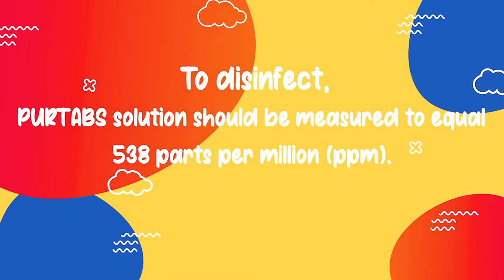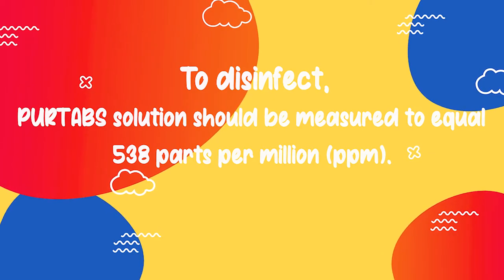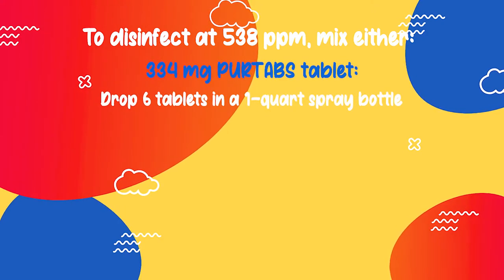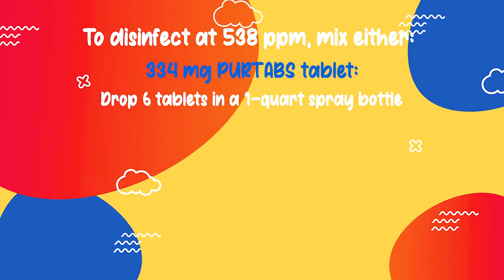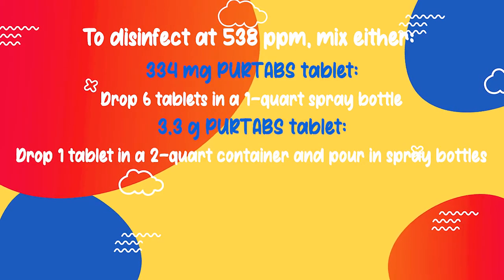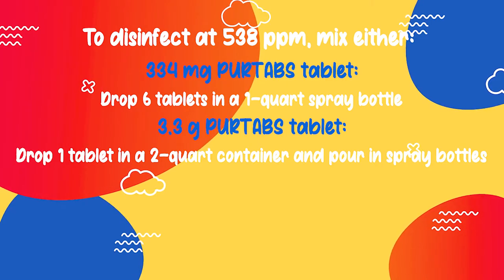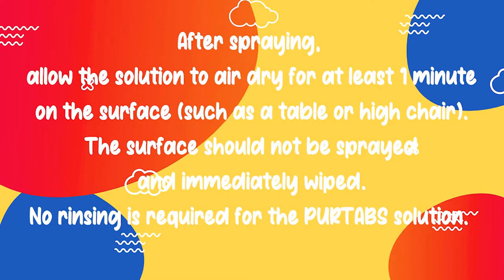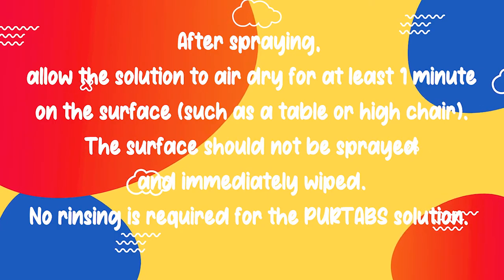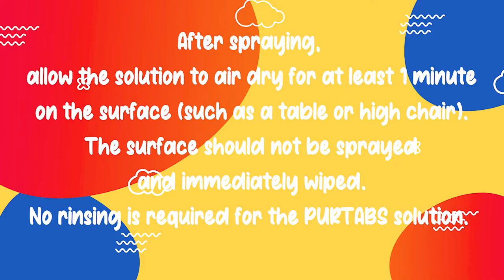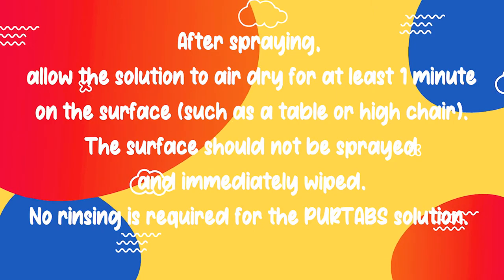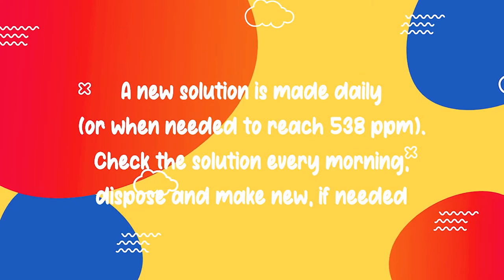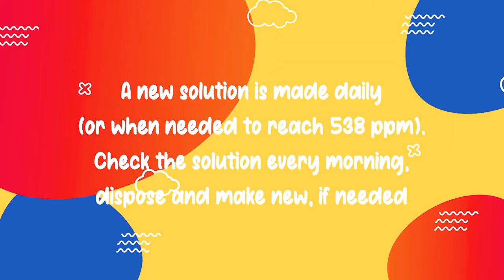To disinfect, the Pure Tabs solution should be measured to equal 538 parts per million (ppm). To disinfect at 538 ppm, mix either: a 334 mg Pure Tabs tablet — drop six tablets into a one-quart spray bottle — or a 3.3 gram tablet — drop one tablet into a two-quart container and pour into spray bottles. Use chlorine test strips to check the solution. After spraying, allow the solution to air dry for at least one minute on the surface, and do not immediately wipe. No rinsing is required. A new solution is made daily or when needed. Check the solution every morning and dispose and make new if needed.